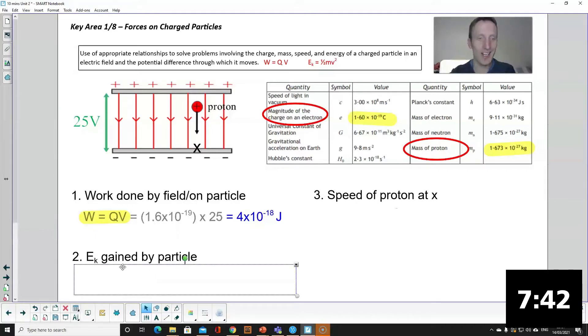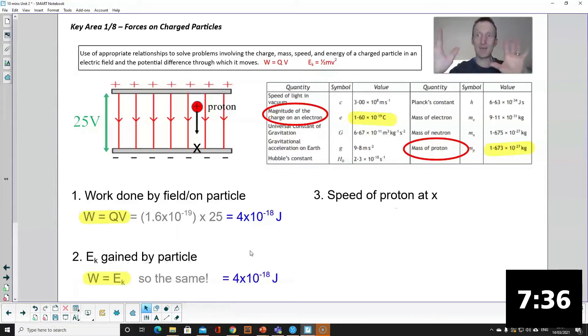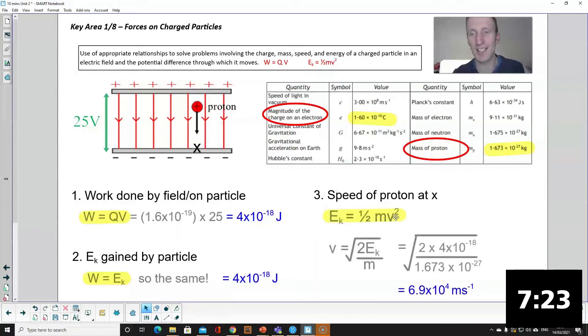Once you've worked out the work done, the kinetic energy gained by the particle will always be exactly the same because it's an energy conversion. The work done by the field is converted into kinetic energy gained by the particle. And then finally you can work out the speed of the particle when it gets to the other side of the electric field by rearranging the kinetic energy equation.